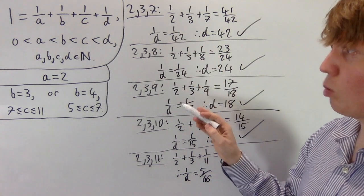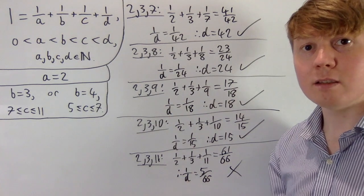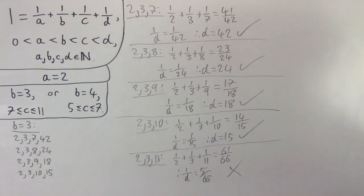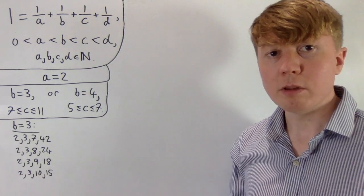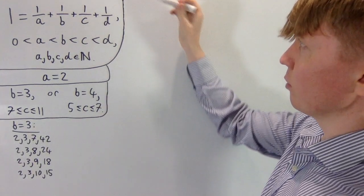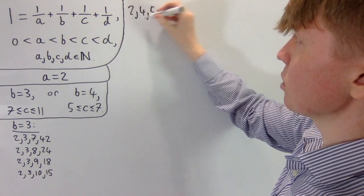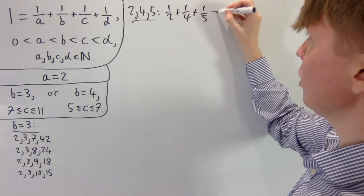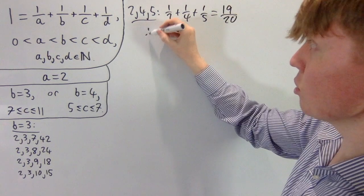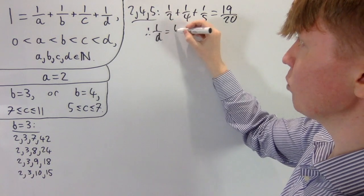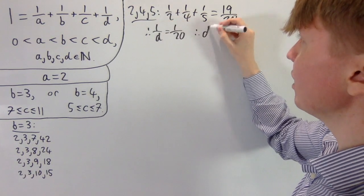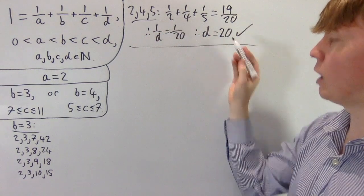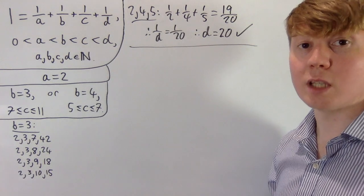Now we look at b equals four and see which values work. Starting with (2, 4, 5): one half plus one quarter plus one fifth equals 19 over 20. So one over d is the remaining one twentieth, giving d equals 20. So (2, 4, 5, 20) works.